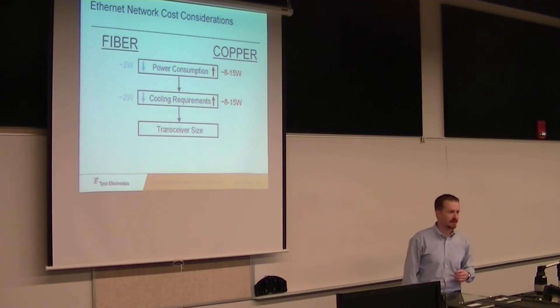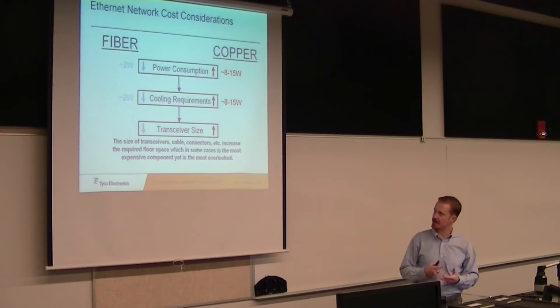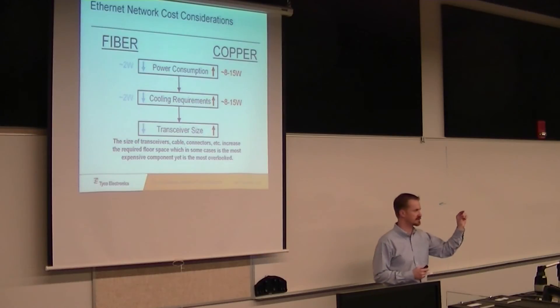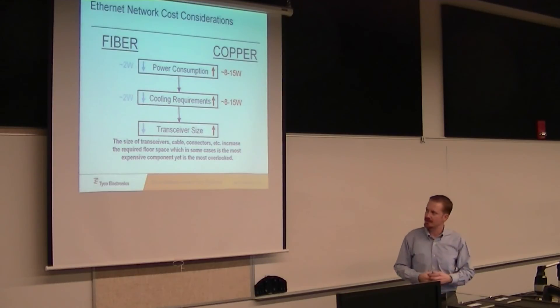Then there's the transceiver size. There are many conversations or modes that you can travel across with fiber that you're kind of limited to on copper with your twisted pairs. So your transceivers are smaller, it takes up less space. A couple other things like size of the transceivers, the size of your cables, your connectors, all those increase the floor space required. So copper connectors are larger than fiber connectors, the cable itself, you need more cables, bigger transceivers, and it all basically comes into a bigger data center or a bigger equipment room. It takes up more floor space.